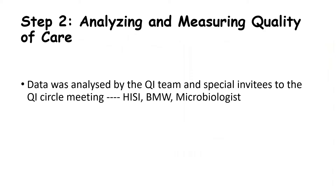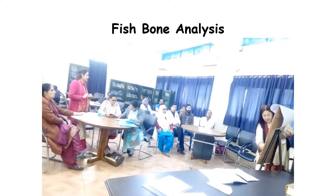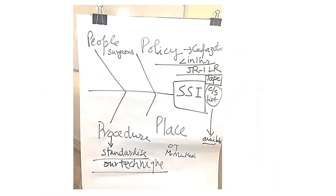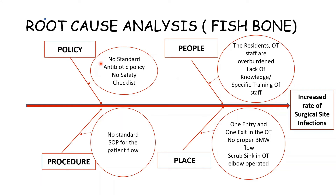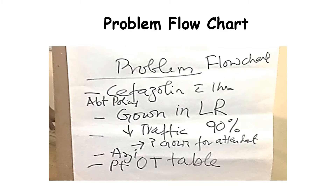The data was analyzed by the QI team. Fishbone analysis was done and it was found that there were problems at multiple levels. There was no standard antibiotic policy, no safety checklists were there, and the residents and staff were overburdened because of too many patients. More importantly, there was lack of knowledge and specific training of the staff, which often led to breach in universal infection prevention measures. There was no standard SOP for patient flow, problems in the OT like one entry and one exit, no proper flow of biomedical waste, and the scrub sink in OT was elbow operated.